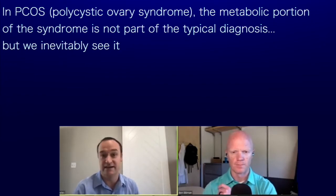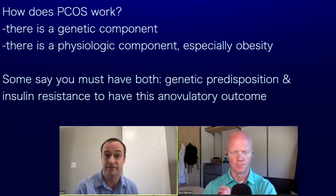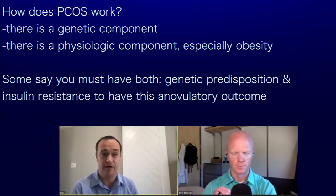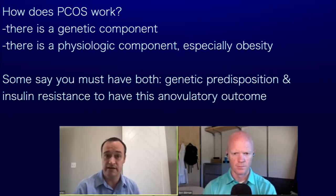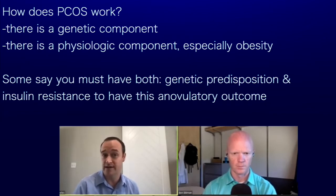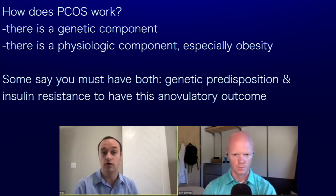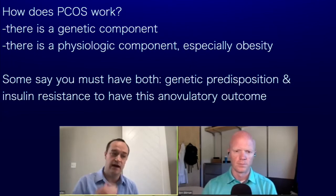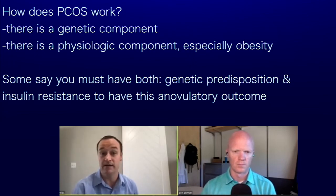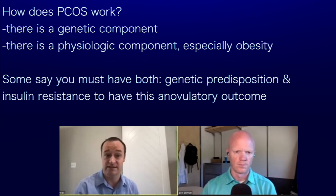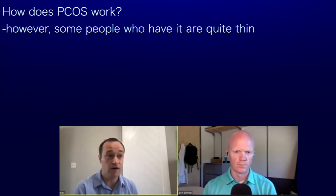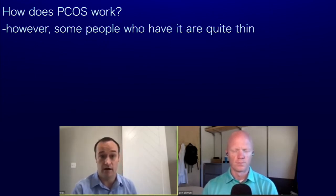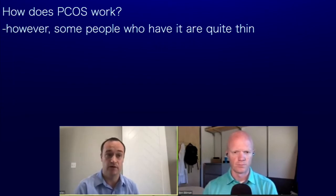How PCOS works is still up for debate. There's definitely a genetic component that drives it, but also a physiologic component, particularly related to obesity. Some say you need a two-hit hypothesis: a genetic predisposition toward insulin resistance and oligo-ovulatory cycles, and then a metabolic tipping point from obesity or other insulin resistance. But not all people are the same — some people with PCOS are quite thin, and some have more body fat, so they don't always follow the same mold.